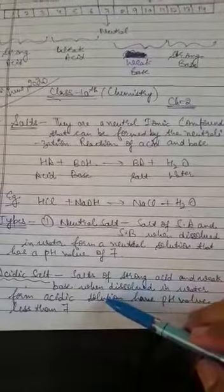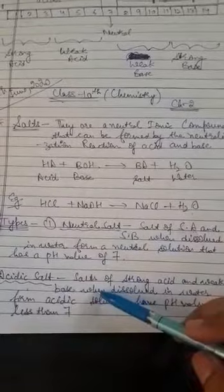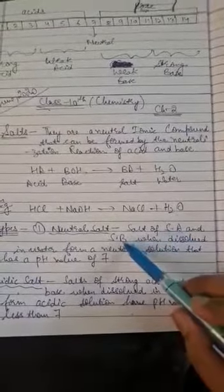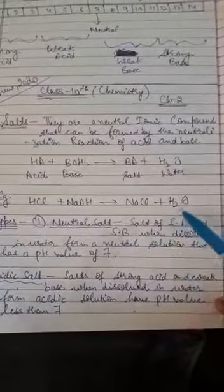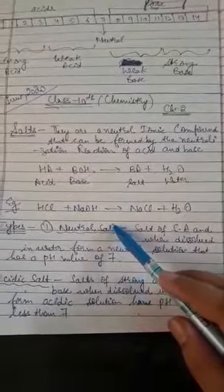Solutions with pH less than 7 are acidic, and those with pH greater than 7 are basic. Strong acid and strong base react and completely dissolve in water. They completely lose their ions and form a neutral solution with pH of 7, called neutral salt.